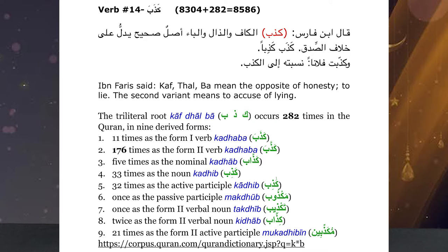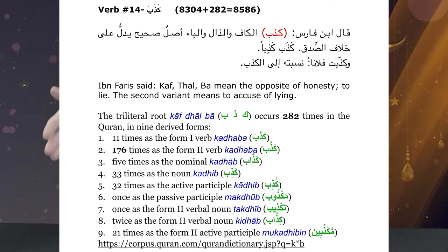He then gives us a sentence showing how the meaning changes when the shidda is added to the ayn — the middle letter. He says: kathabtu fulanan, yani nasabtuhu ilal kathib. When you use it with the shidda, you are essentially saying that the person you are referring to is a liar — that they are false and not representing the truth.